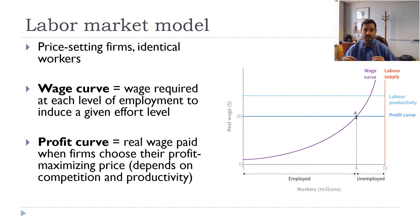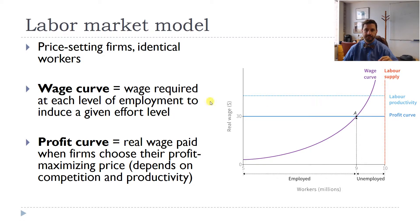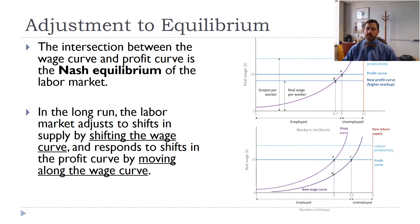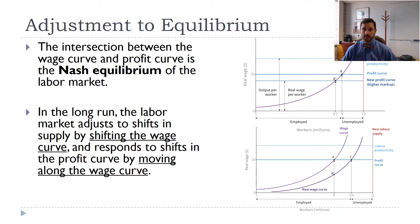The profit curve is the wage that firms will choose in order to maximize their profits. The profit curve actually determines the real wage, but we're going to talk about something this model is hiding as we build it up. When we're at an equilibrium, we can think of that as the Nash equilibrium between workers and firms. A Nash equilibrium — if you need a review, it's covered in chapter four — is basically a mutual best response: given what you're doing I can't do any better, and given what I'm doing you can't do any better. Here we're talking about employees and employers.